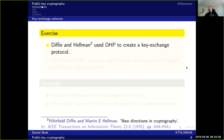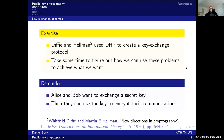Diffie and Hellman used the Diffie-Hellman problem to create a key exchange protocol. Take some time to figure out how these problems can be used to achieve what we want. The goal is that Alice and Bob want to exchange a secret key, and Eve should not be able to extract this secret from the communication.